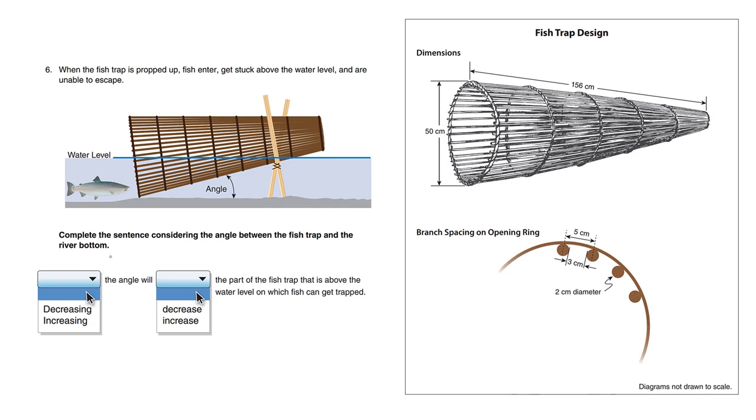Either decreasing or increasing the angle will either decrease or increase the part of the fish trap that is above the water level on which fish can get trapped. This is a bit wordy; you might have to read it a few times. Okay, so I drew this fish trap with a slightly different angle.